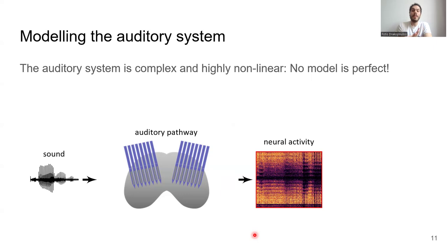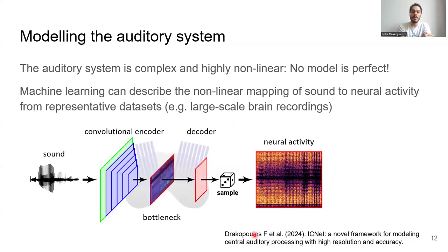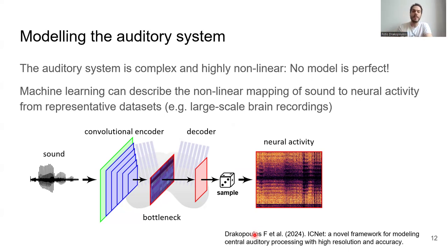This means that no model is really perfect, and different models can be better suited for different applications. But recent advances in machine learning have the potential to provide tools to describe the whole nonlinear mapping of sound to neural activity. This can be done by training models to learn the transformation directly from data, which needs to be representative and carefully designed to include all these different sound phenomena that have been studied over all these decades.